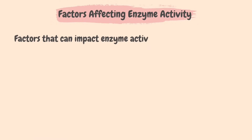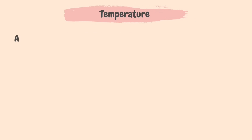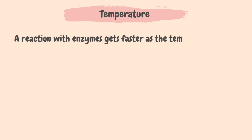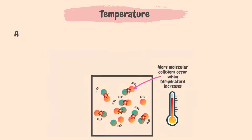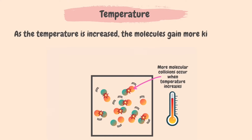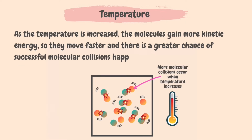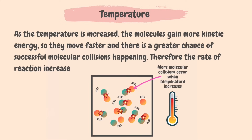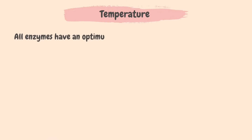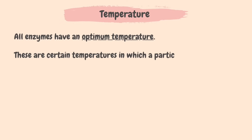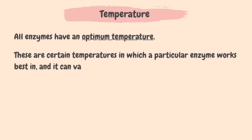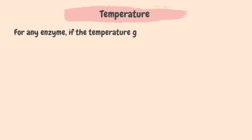Now let's look at the factors that affect enzyme activity: temperature and pH. The rate of an enzyme-catalyzed reaction increases as the temperature increases. As the temperature is increased, the molecules gain more kinetic energy, so they move faster and there is a greater chance of successful molecular collisions, therefore the rate of reaction increases. All enzymes have an optimum temperature — a temperature at which a particular enzyme works best — and it can vary between different enzymes. For any enzyme, if the temperature gets too high, it will get denatured.